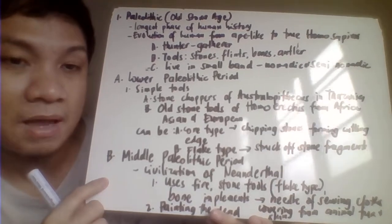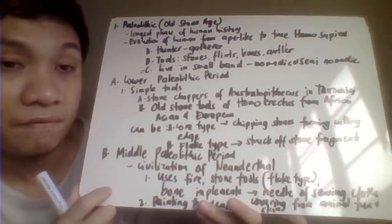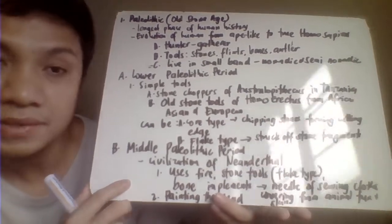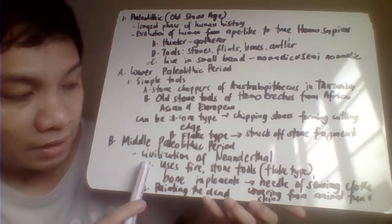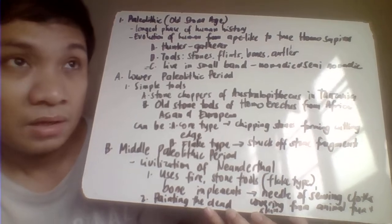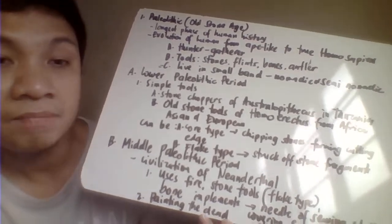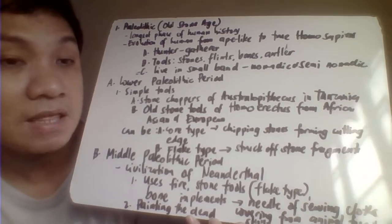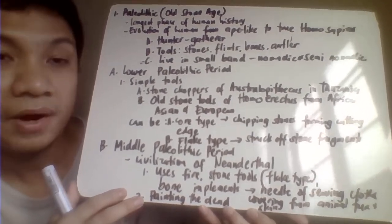The Middle Paleolithic period describes the civilization of the Neanderthals. They used pointed stones and were already using fire for their food. They also used bone implements in the form of needles for sewing clothes, using animal fur or skin as body coverings against environmental temperature. As part of their religious practice, they painted their dead ones before burial.